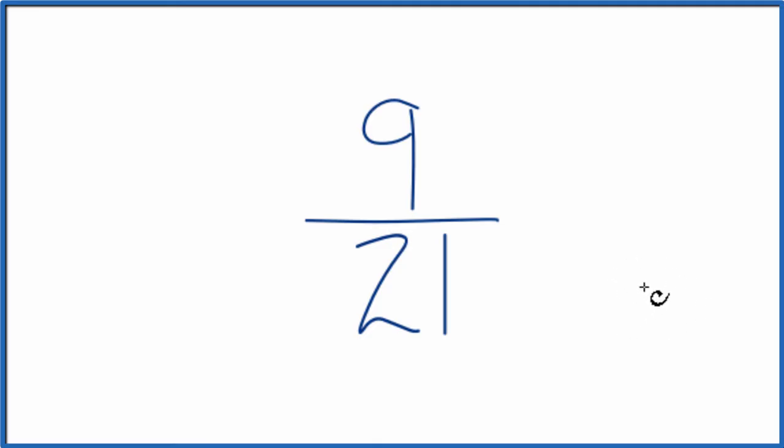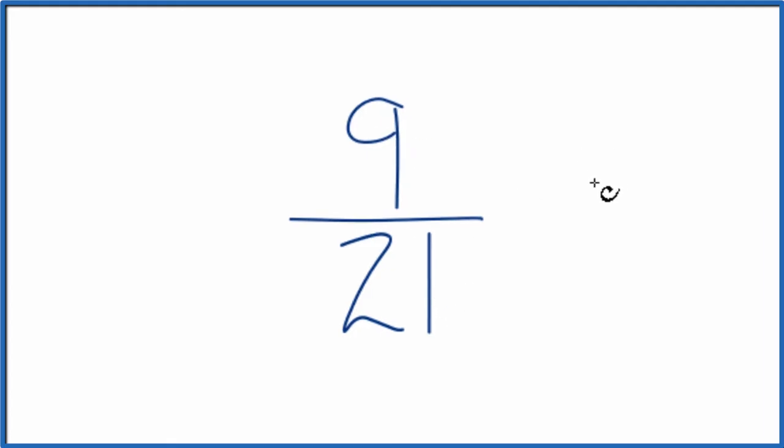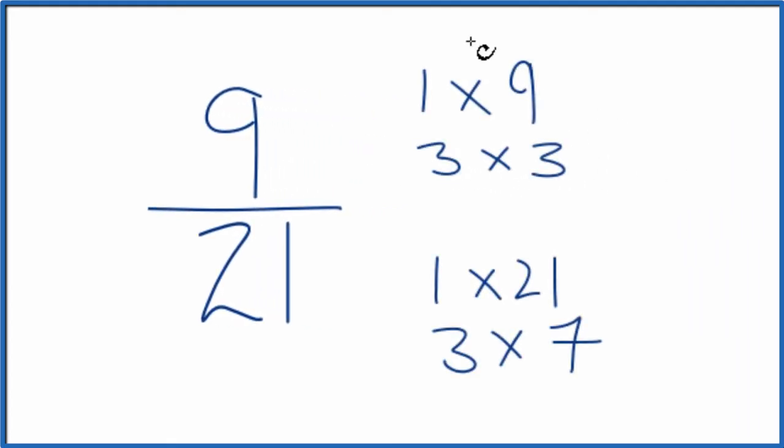To do that, we need to find a common factor, something that goes into 9 and 21. So here are the factors of 9 and 21. When I look at the factors of 9 and 21, the greatest common factor is going to be 3.